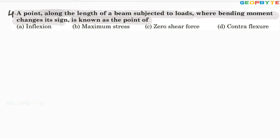Next problem: a point along the beam where the bending moment changes its sign — wherever the BMD changes sign from negative to positive or positive to negative, that point is called the point of contra flexure. Options: inflection — no; maximum stress — no; zero shear stress — no; point of contra flexure — yes. The point of contra flexure can be found in an overhanging beam, but not in a simply supported or cantilever beam. Answer is option D.